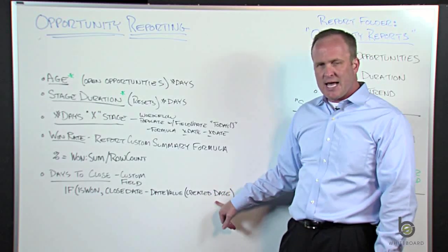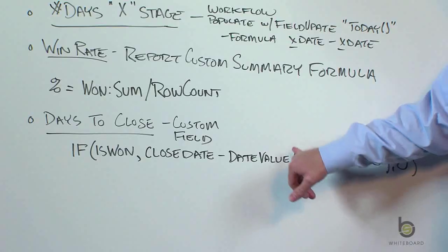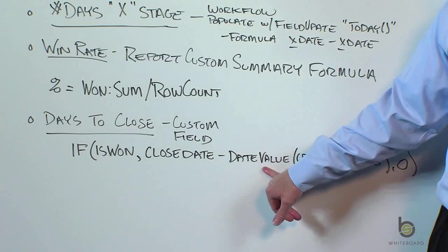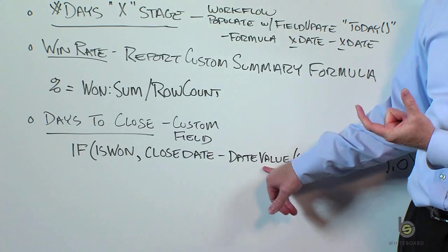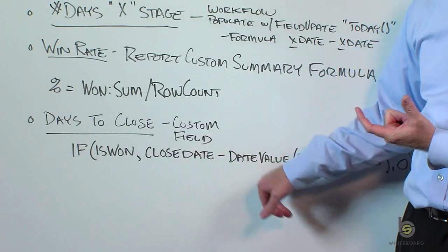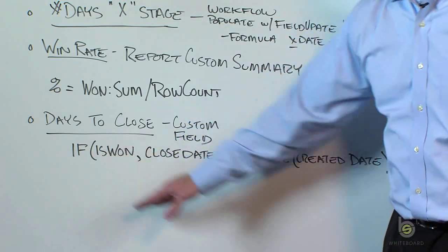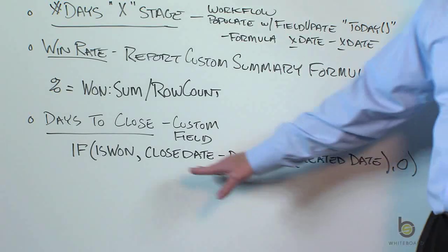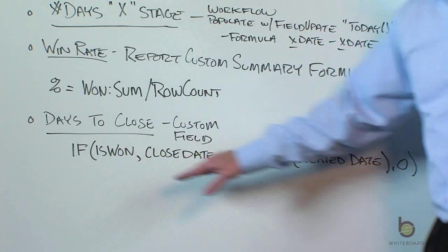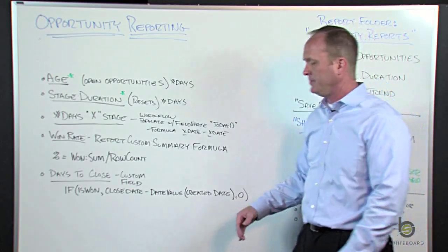With created date, that's actually a datetime syntax, so you have to wrap the created date in what's called a DateValue function — converting it from a datetime down to a date — then you can do a date minus a date. If the opportunity is won, do the math between those two dates and give a number. If it's not won, the else statement returns zero, so until it's won it expresses as zero.